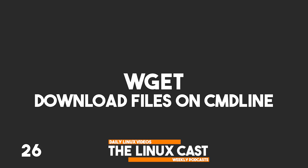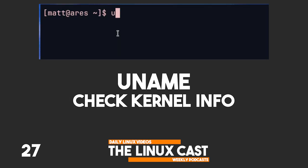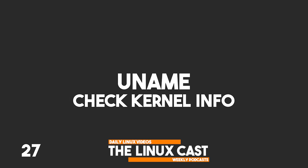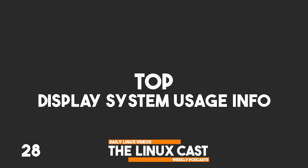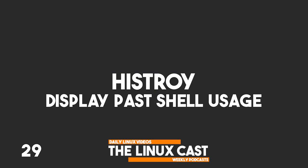wget downloads files using the command line. uname checks Linux kernel information. top lists current system information including processes and processor usage.